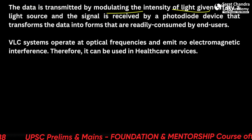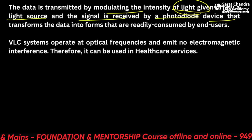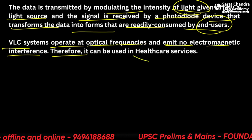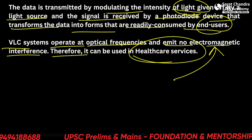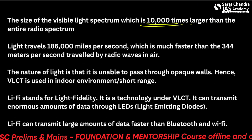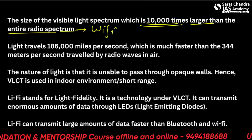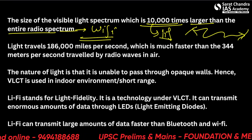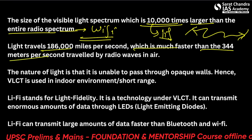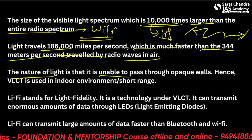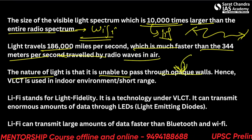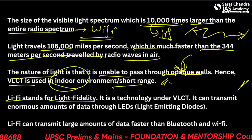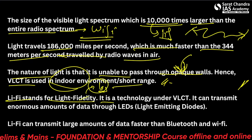Data is transmitted by modulating the intensity of light from a light source, and then the signal is received by a photodiode device that transforms data into a form consumable by end users. VLC systems operate at optical frequencies and emit no electromagnetic interference, making them useful in healthcare. The visible light spectrum is 10,000 times larger than the entire radio spectrum — meaning more data can be transmitted at once. Light travels at C = 3 × 10⁸ m/s, much faster than radio waves at 344 m/s in air. The only problem is light cannot pass through opaque walls, so VLC is used in indoor or short-range environments. Li-Fi is a technology under VLC; it can transmit enormous amounts of data faster than Bluetooth and Wi-Fi.